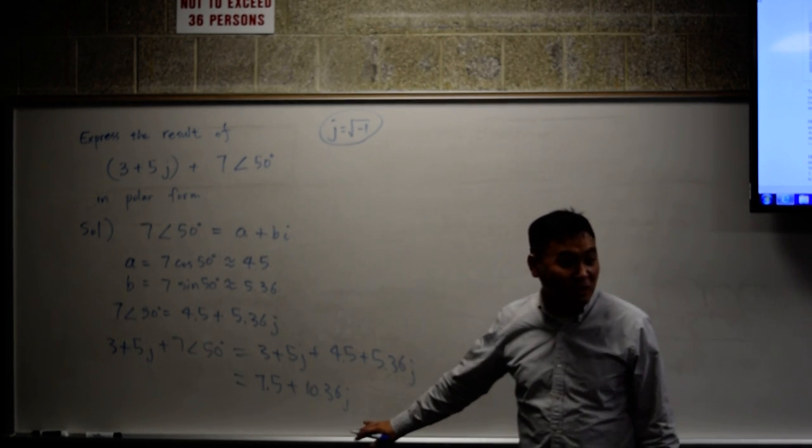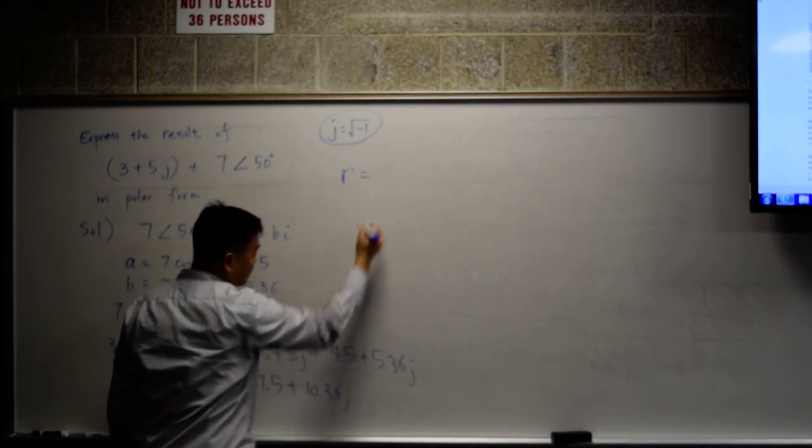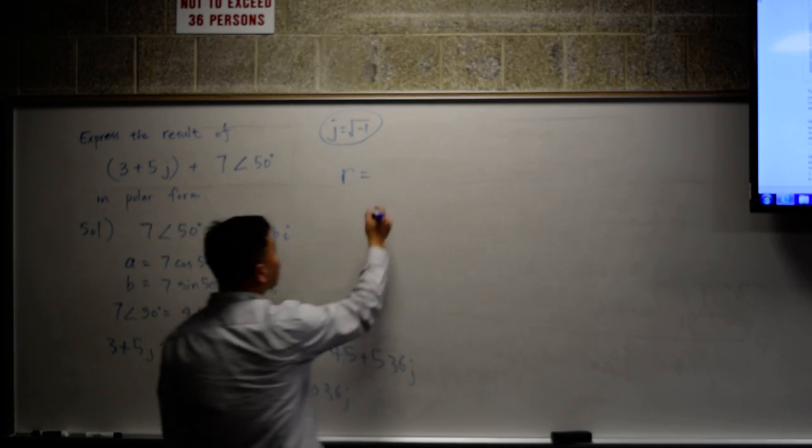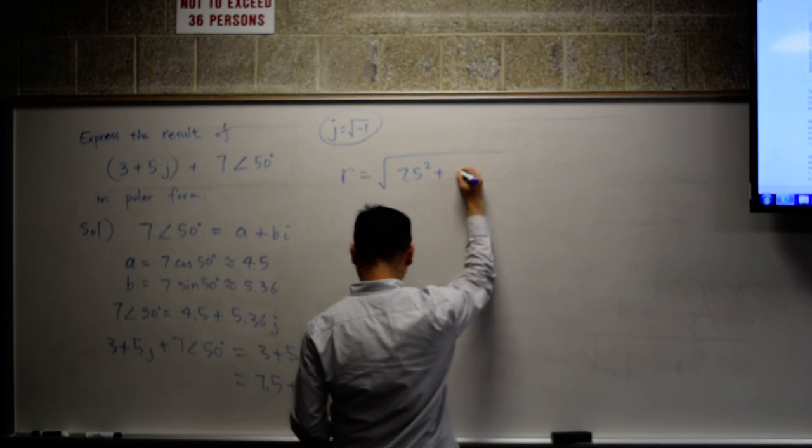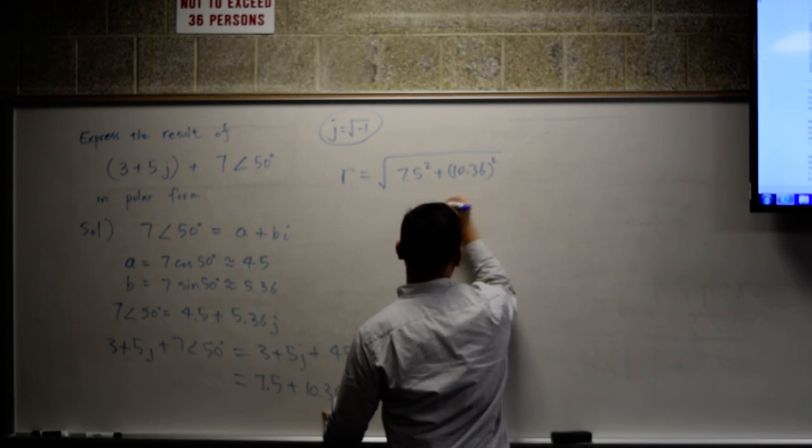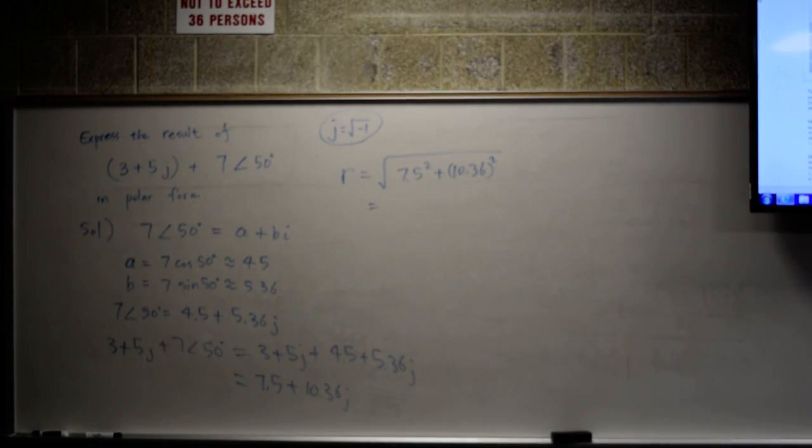You have to find the magnitude and the angle. How do you get the magnitude R? You take the square root of the squares. So 7.5 squared plus 10.36 squared. We have to compute that. Square root of 7.5 squared plus 10.36 squared. And that's 12.79.